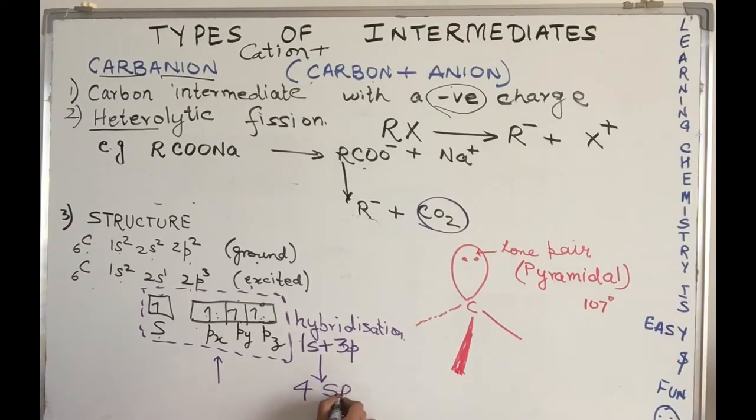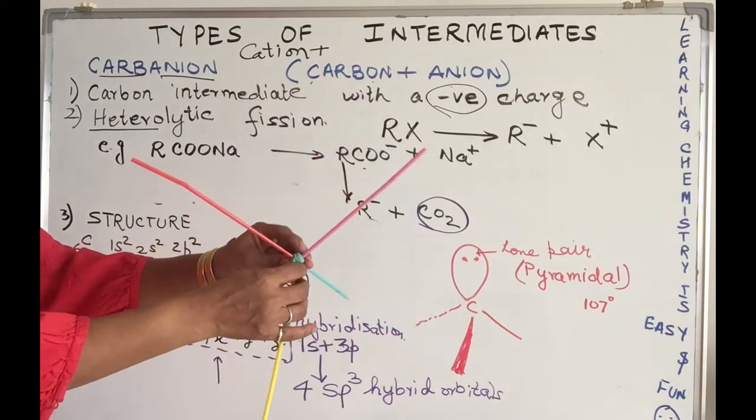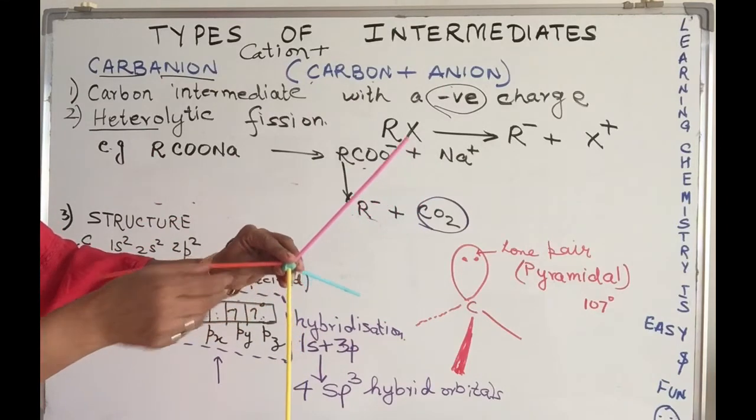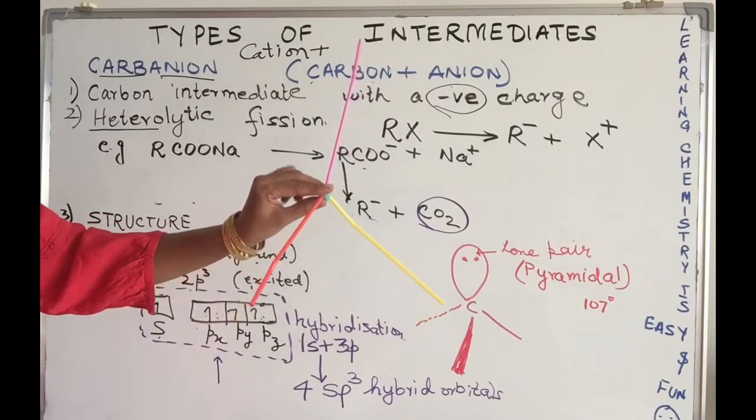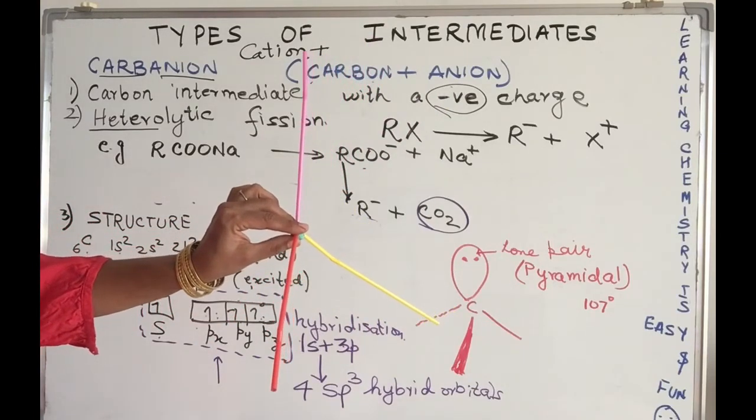These four sp3 hybrid orbitals should technically be distributed in a tetrahedral arrangement. All these are explanations we give to explain the behavior of any substance. This is how they should be distributed.